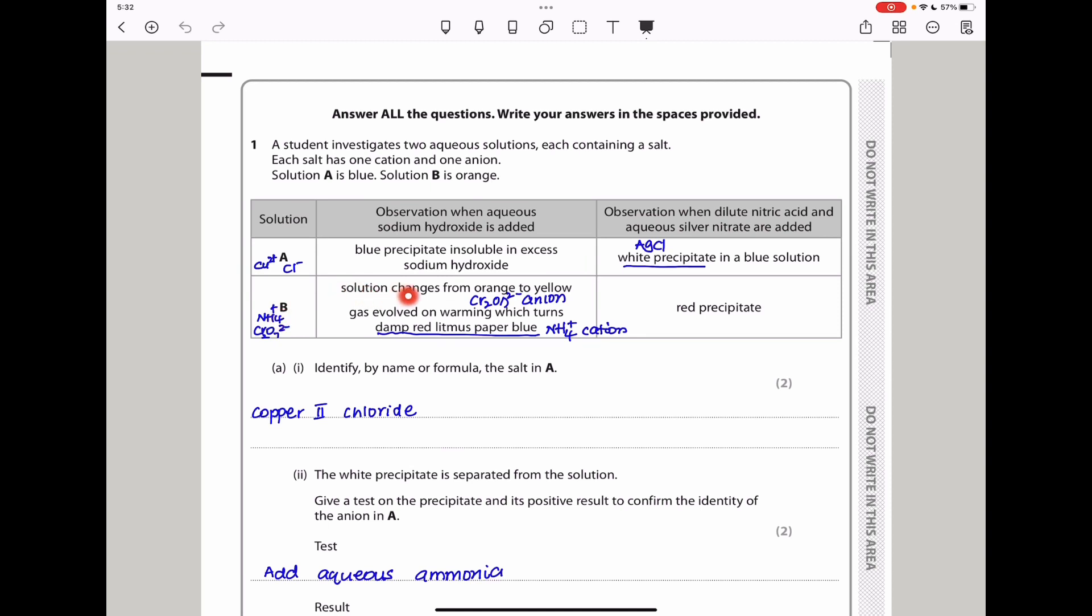Formation of a white precipitate with dilute nitric acid and silver nitrate means there should be silver chloride or a chloride at least in there. For B, the solution changes from orange to yellow. Anytime you see orange turn to yellow, there is a possibility that a dichromate is being converted into chromate. A gas is evolved on warming which turns damp red litmus paper blue. This gas should be ammonia, and therefore this cation should be ammonium cation.